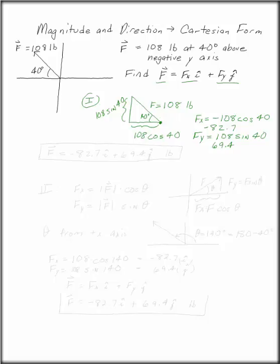That would be in the negative i direction and the positive j direction. So that F is minus 82.7 i plus 69.4 j pounds.